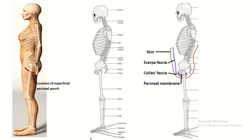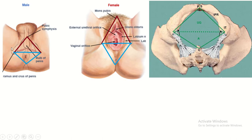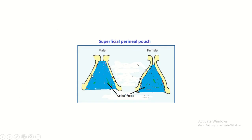Just above the perineal membrane is the location of the deep perineal pouch, which is a closed sac or closed space. In the lateral view of the pelvis, we can see the location of the urogenital triangle, the anal triangle, and the superficial perineal pouch. The location of the superficial perineal pouch is shown in both male and female.